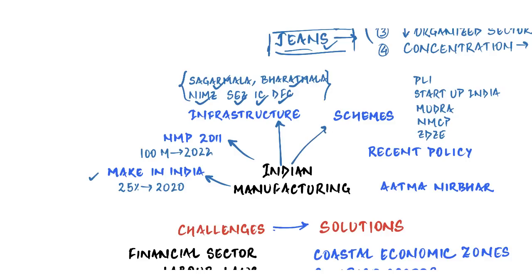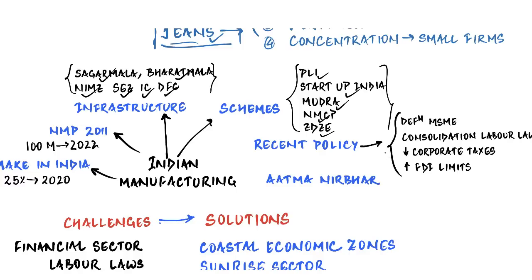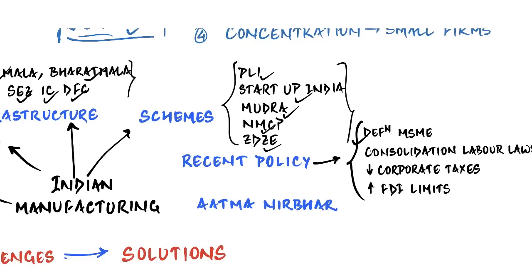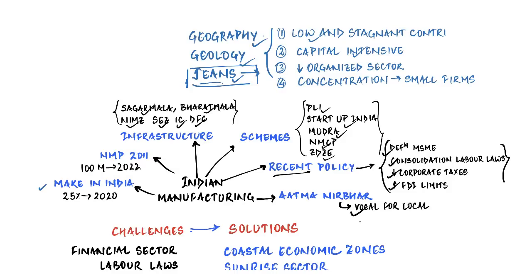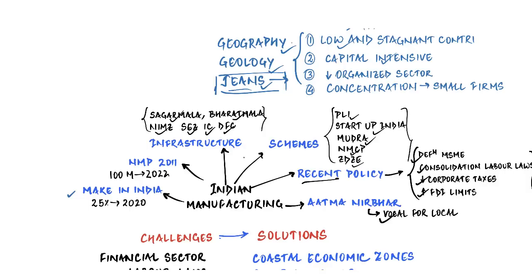There are many other schemes directly helping manufacturing: the Production Linked Incentive Scheme, Startup India, Stand Up India, Mudra Scheme, and the National Manufacturing Competitiveness Program with its Zero Defect, Zero Effect initiative. Recent policy initiatives include redefinition of MSMEs, consolidation of labour laws into four labour codes, reduction in corporate tax rates, increased FDI limits in sectors like defence, and a new public procurement policy. The most recent addition is Atmanirbhar Bharat, with its tagline 'vocal for local' and protection to domestic industries through tariffs.